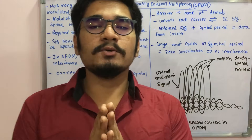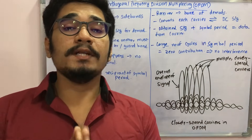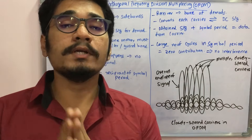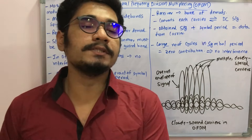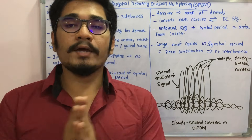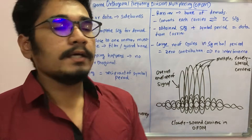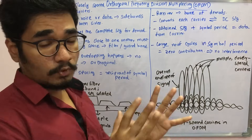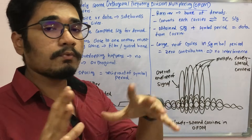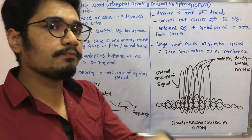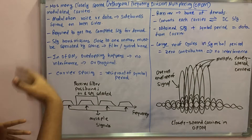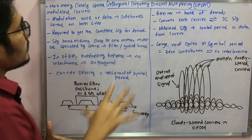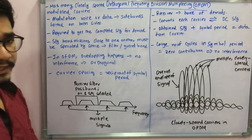Welcome back to the channel. Today we will be seeing what is OFDM — that is Orthogonal Frequency Division Multiplexing — and OFDMA, which is a multiple access technique. This is the principle that OFDMA follows. What OFDM basically has is many closely spaced modulated carriers.